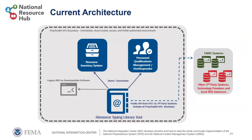Here is the current architecture showing what things look like as of this summer. The large gray dotted line represents the Prep Toolkit preparedness toolkit Authority to Operate boundary — all of these systems now exist within this secure, centralized, cloud-hosted, authorized environment. At the bottom is the Resource Typing Library Tool as the foundation, feeding into the Resource Inventory System and One Responder. The legacy IRIS — the Incident Resource Inventory System — is still available as a downloadable software outside the boundary. The blue dotted line going outside the boundary represents the API connecting with third-party systems.